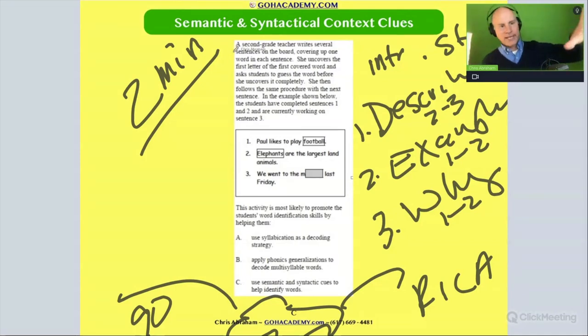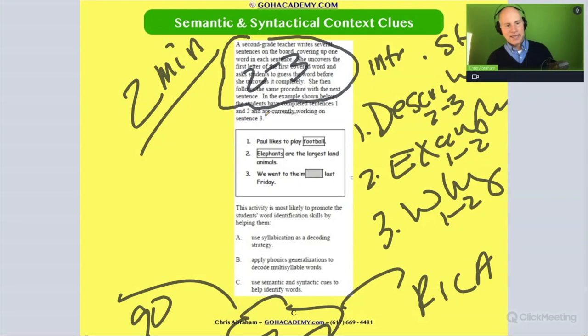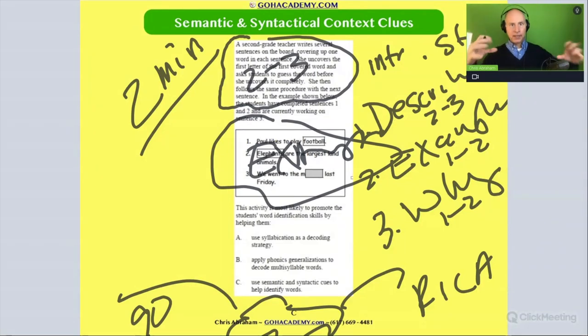Where's our describe? Well, it's right here. A second grade teacher writes several sentences on the board, covering up one word in each sentence. She or he uncovers the first letter of the first covered word and asks the students to guess the word before she uncovers it completely. Then the students follow the same procedure with the next sentence. There's at least a two or three sentence description of the activity and there are a couple of examples of what this could look like. There's a description, there's an example, and then there's like why are we doing this.